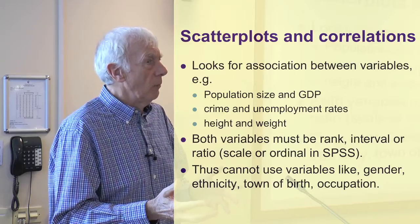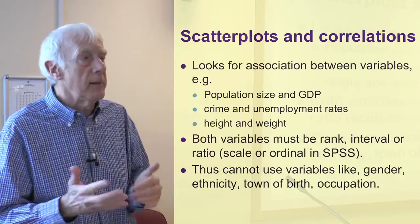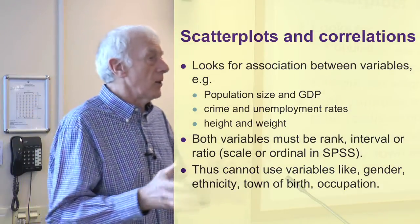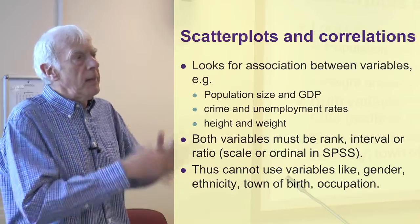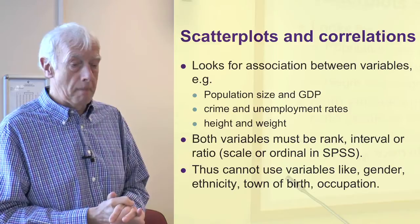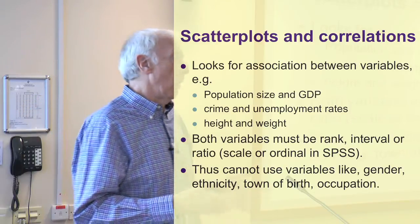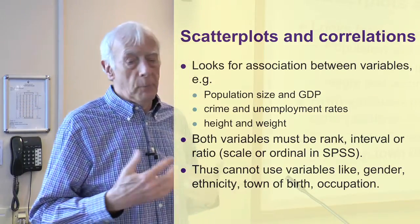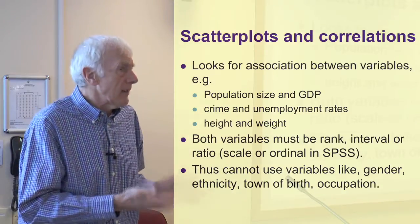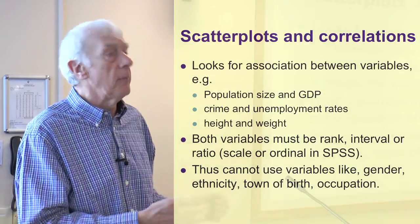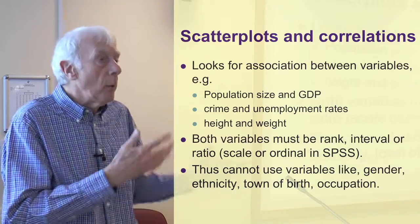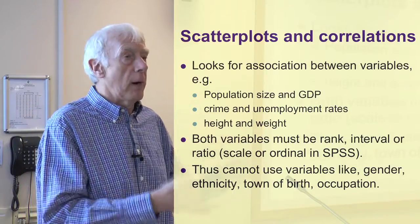We might expect that, other things being equal, but that's not quite exactly the case — some countries are very rich and have much higher GDPs per person. But in general, the bigger the population, the bigger the gross domestic product. Another example: crime and unemployment rates. The idea is that as unemployment rates rise, so does crime. Interestingly, in recent years unemployment has gone up but the crime rate has been going down.